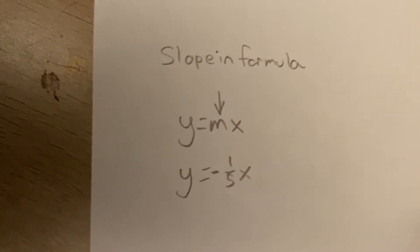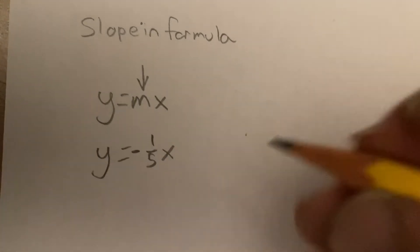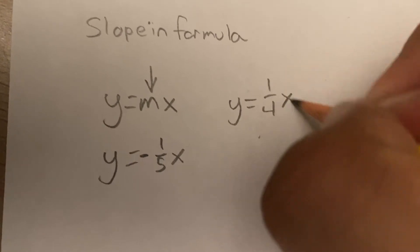And that's it. If I wanted to write this one, which was 1 over 4, as a formula, it would be y equals 1 over 4 x.